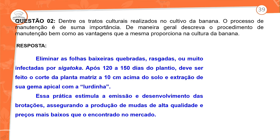A gema apical deve ser retirada, removida com a lurdinha — aquele equipamento que a gente utiliza para facilitar esse procedimento. Essa prática vai estimular a emissão do desenvolvimento dos brotos laterais, assegurando a produção de mudas de qualidade alta. Sempre que você fizer esse tipo de procedimento, a lurdinha auxilia na estimulação desses brotos.